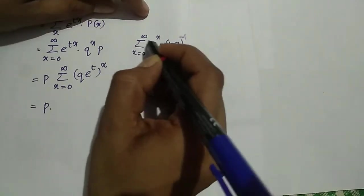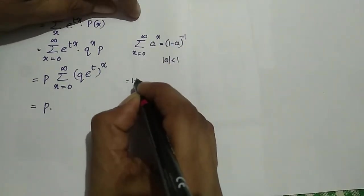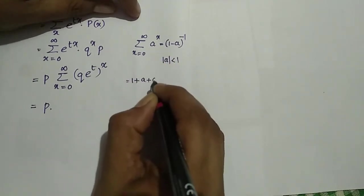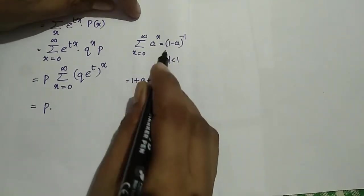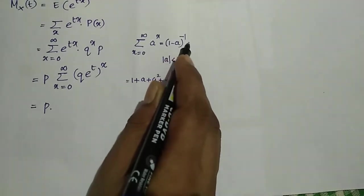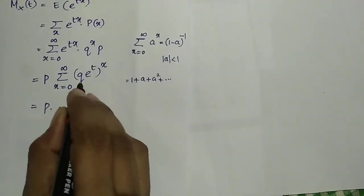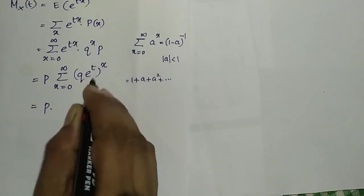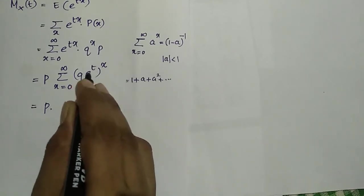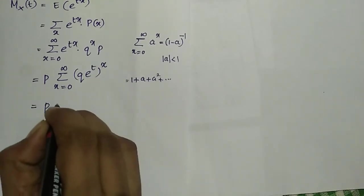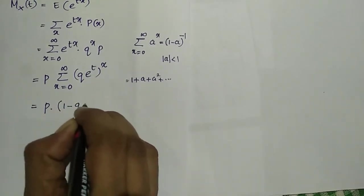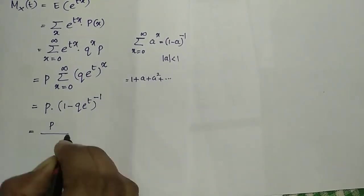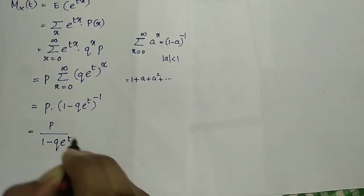That is, a raised to 0 plus a raised to 1 plus a squared plus etcetera equals (1 minus a) raised to minus 1. So here, expanding: 1 plus q e to the t plus (q e to the t) squared plus etcetera, which equals (1 minus q e to the t) raised to minus 1, which equals p divided by (1 minus q e to the t).